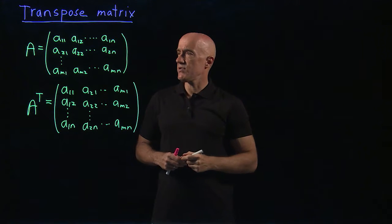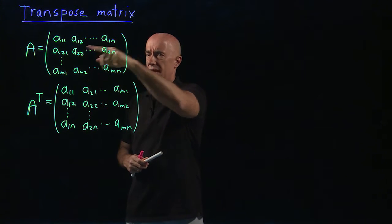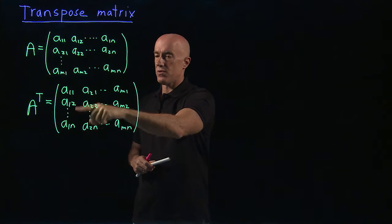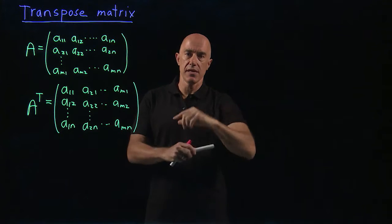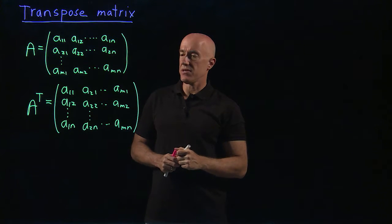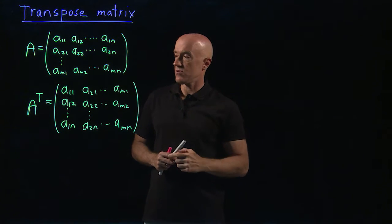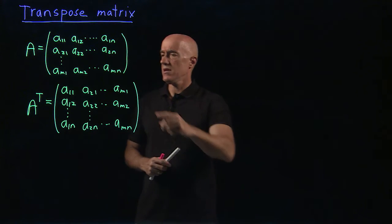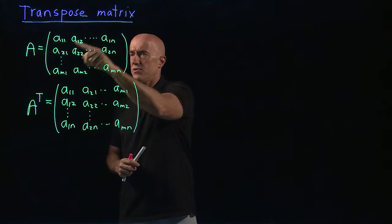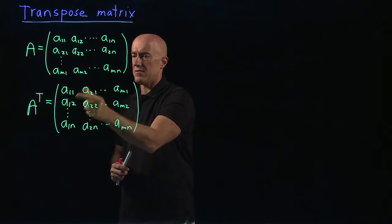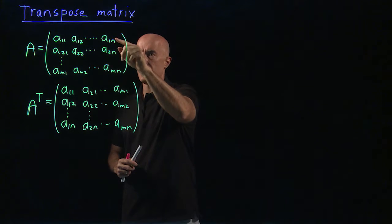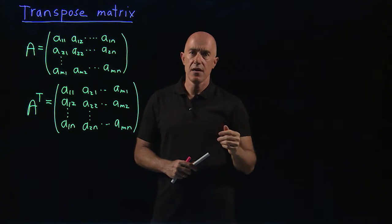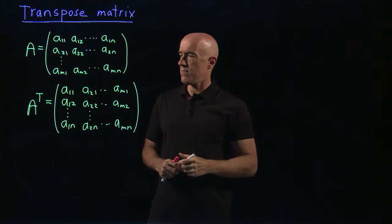The matrix A was m rows and n columns. The matrix A transpose is now n rows and m columns. So the dimension of the matrix gets transposed, gets changed. You can also look at this as a symmetry — A₁₂ and A₂₁ get changed, A₁ₙ and Aₘ₁ get changed. So it's actually a reflection about the diagonal of the matrix.